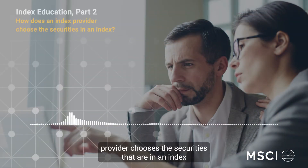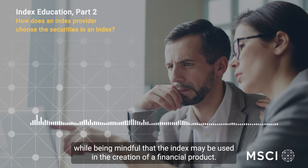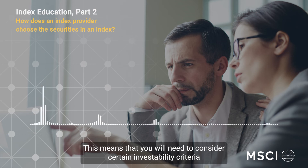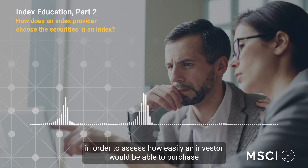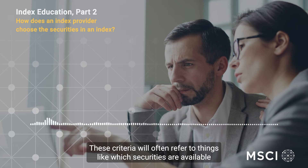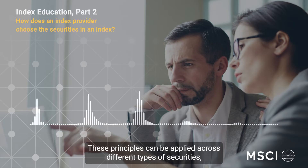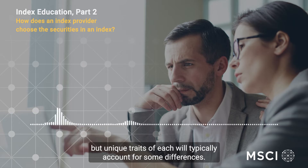An index provider chooses the securities that are in an index by including as many securities as possible within that market or market segment, while being mindful that the index may be used in the creation of a financial product. This means that you will need to consider certain investability criteria in order to assess how easily an investor will be able to purchase and sell the securities in the index. These criteria will often refer to things like which securities are available for public trading, how frequently they are traded, and how easily they can be accessed. These principles can be applied across different types of securities, but unique traits of each will typically account for some differences.